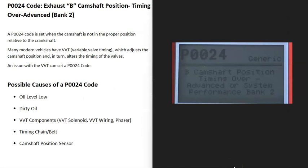Today I'm talking about a P0024 code, what it is and how you go about fixing it. So what is a P0024 code? It's an exhaust B camshaft position timing over-advanced bank 2.